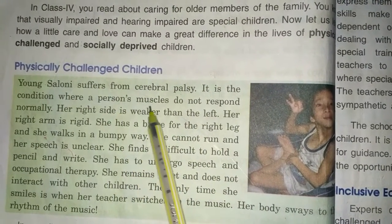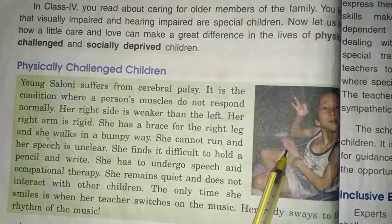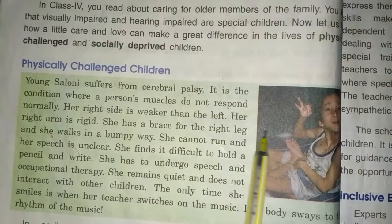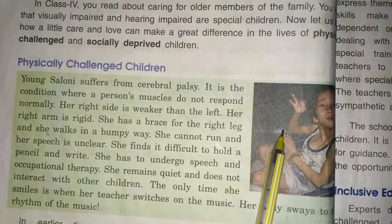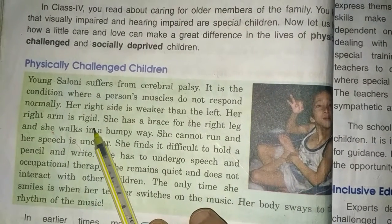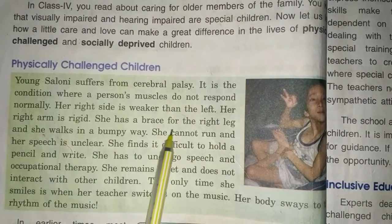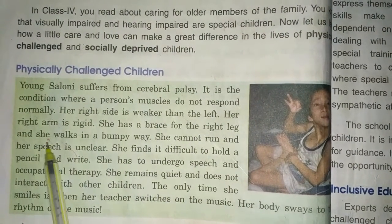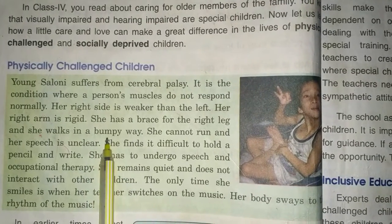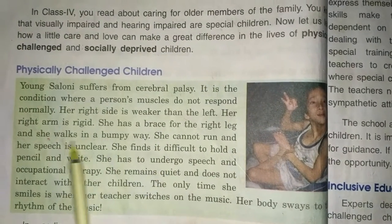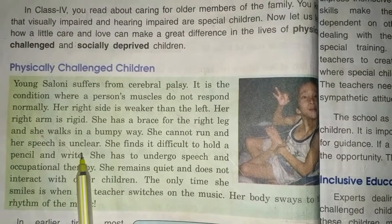Look at the picture — her arms and legs show that her right side is weaker than the left. Her right side responds less compared to her left side. Her right arm is rigid and cannot work properly, and she has a brace for her right leg. A brace means extra support for walking. She walks in a bumpy, jerky manner and cannot run. Her speech is also unclear.